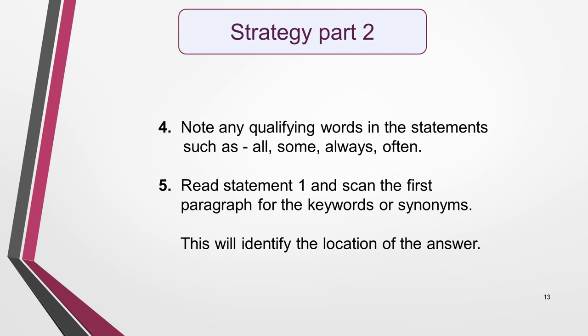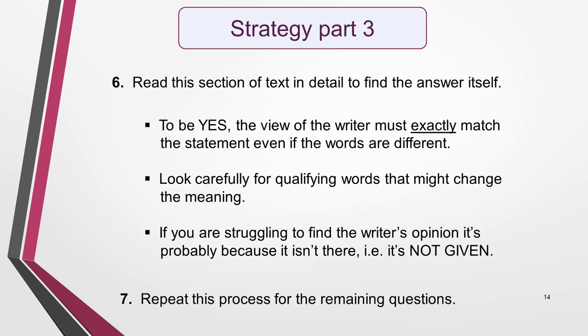Then, reread statement 1 and scan the first paragraph — maybe 2 — for the key words or synonyms of them. Scanning will locate where the answer is, but detailed reading of this section of the text is now needed to decide if the specific information you're looking for is correct, incorrect or not given. As you read, remember to consider these three things: to be yes, the view of the writer must exactly match the statement, even if the words are different; look carefully for qualifying words that might change the meaning; and if you're struggling to find the writer's opinion, it's probably because it isn't there — that is, it's not given. Repeat this whole process for the remaining questions.